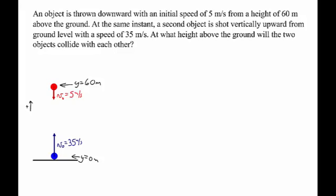An object is thrown downwards at 5 meters per second from a height of 60 meters. At the same time, a second object is shot upwards with a speed of 35 meters per second. And we want to calculate the height above the ground where the two objects will collide with each other.